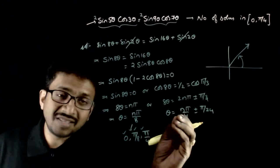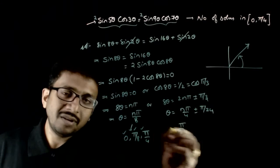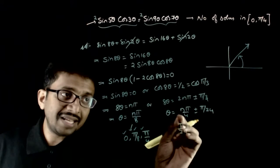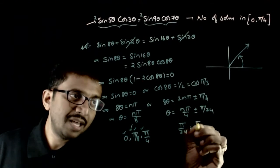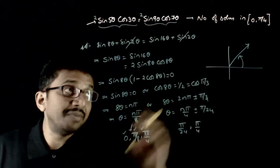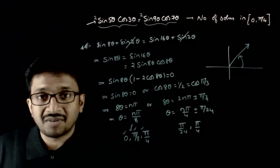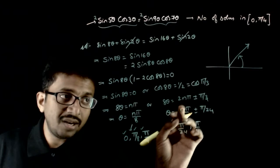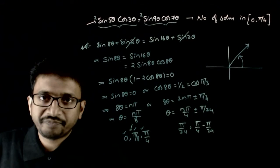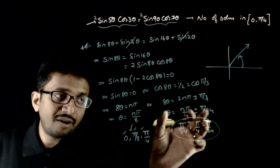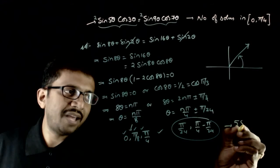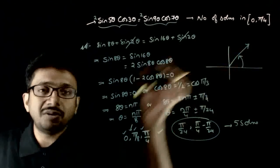For θ = nπ/4 ± π/24: putting n=0 gives ±π/24, but -π/24 doesn't fall in the interval, so we get π/24. For n=1, we get π/4 + π/24, which exceeds π/4 and is invalid, but π/4 - π/24 is less than π/4 and valid. So there are two solutions of this type. In total, we have 3 + 2 = five solutions to this equation in the interval [0, π/4]. Thank you.